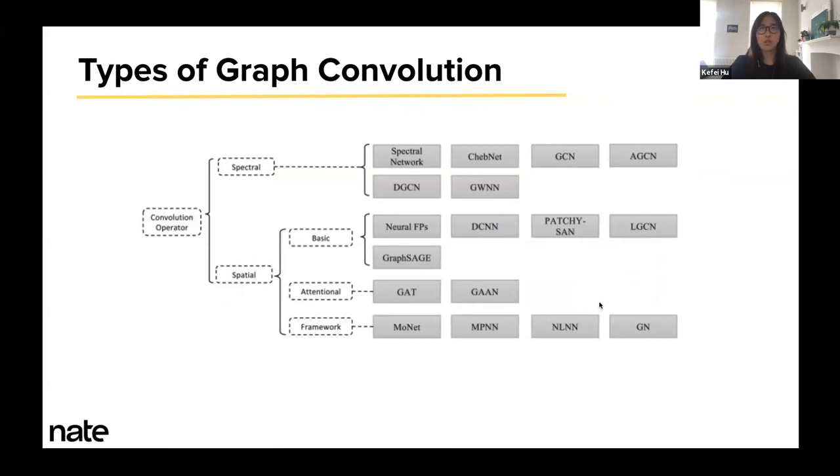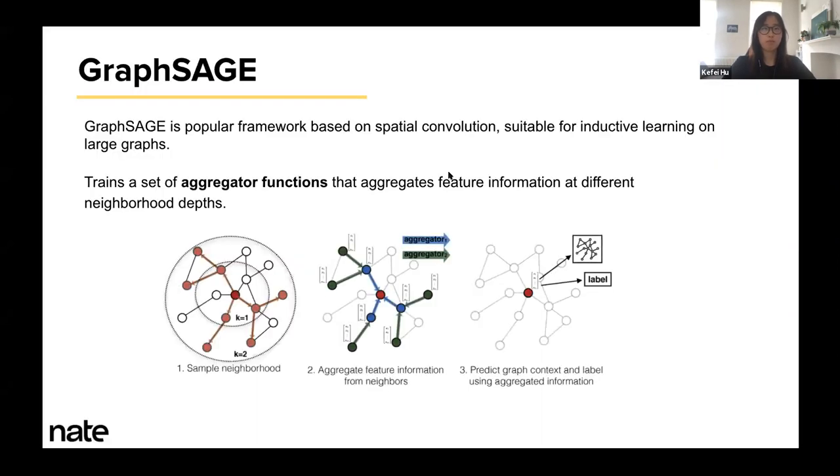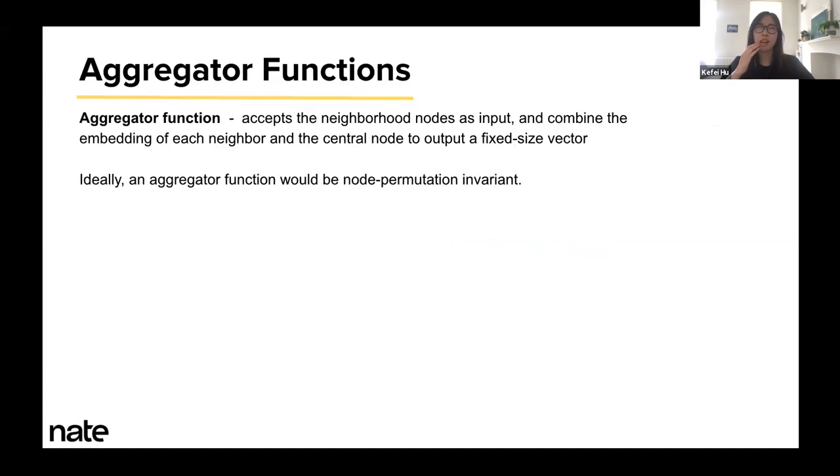Having introduced spatial convolution, I am going to now introduce to you two of the most popular frameworks for spatial convolution: GraphSAGE and graph attention networks. First, we have GraphSAGE. GraphSAGE is a really popular model that is used for inductive learning on large graphs. Like we introduced earlier, it learns aggregator functions that can induce the embedding of a new node given its features and neighborhood. It trains an aggregator function to aggregate neighbors at different search steps.